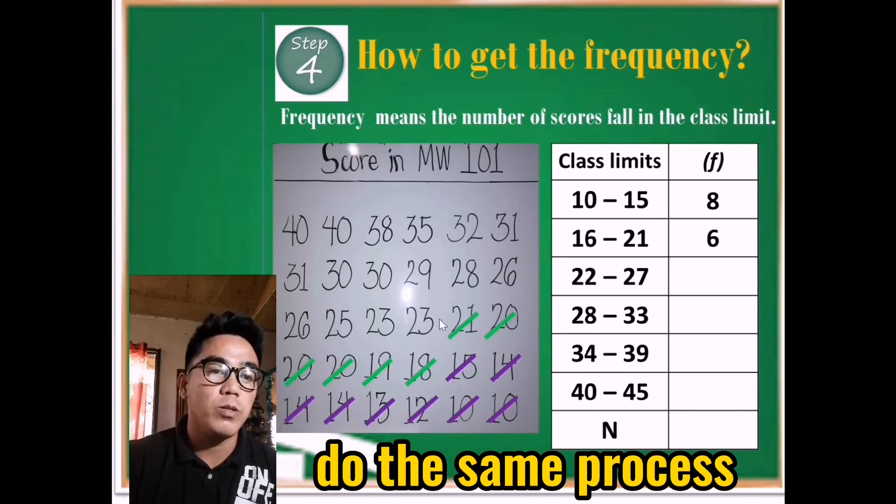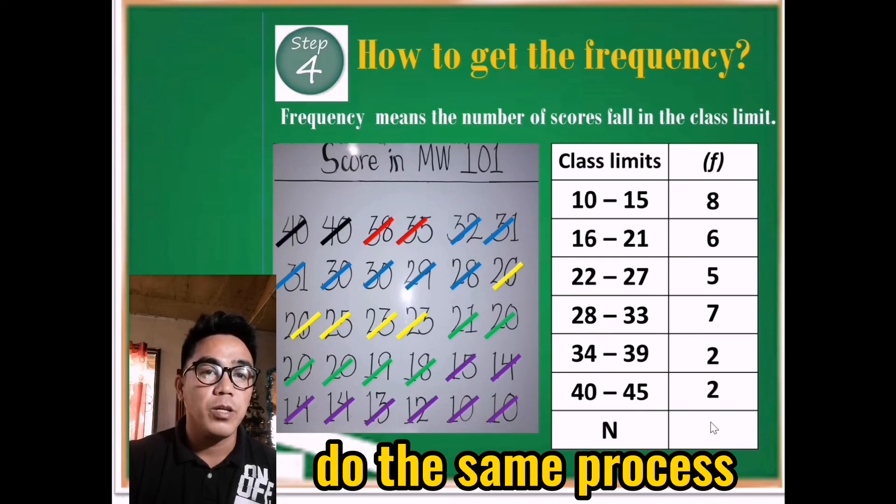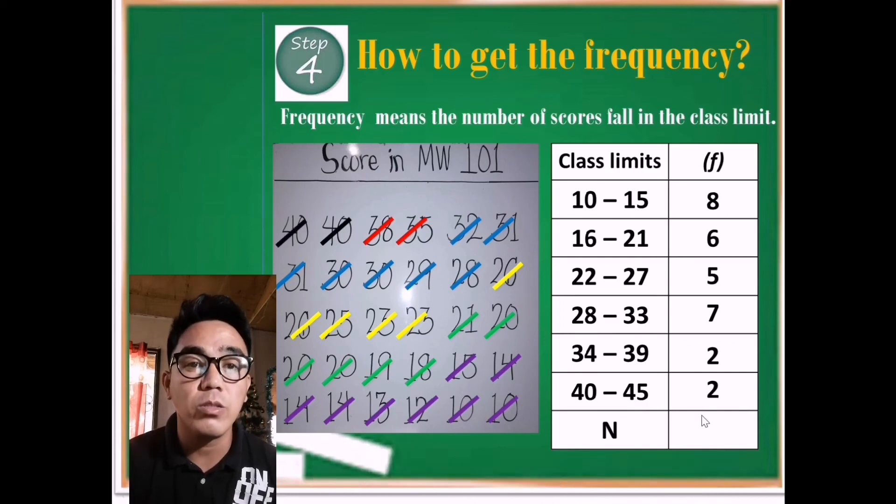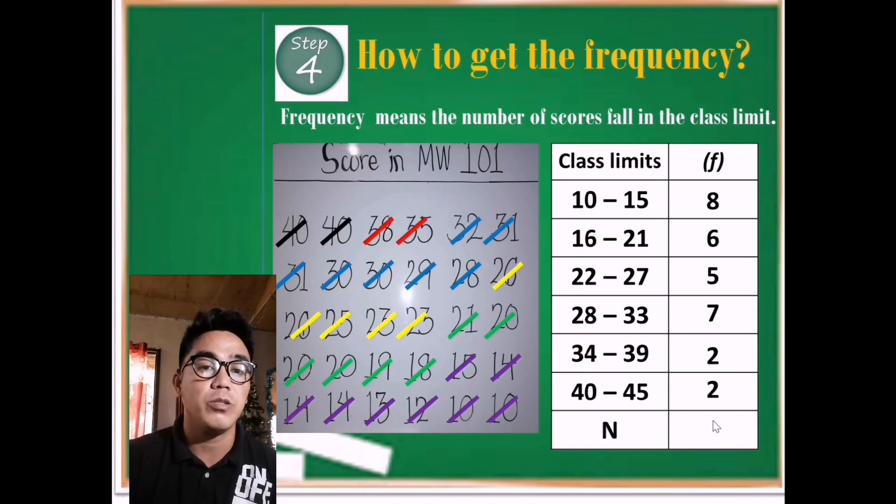22 to 27: 1, 2, 3, 4, 5. We put 5 here. 28 to 33: we have 1, 2, 3, 4, 5, 6, 7. We put here as 7. And 34 to 39: 1, 2. Put it here as 2. Last but not least is 40 to 45: we have 1, 2, so we have 2. If we add them all, then we're able to get the total number of population, which is 30. So right now, this is how we get the frequency.